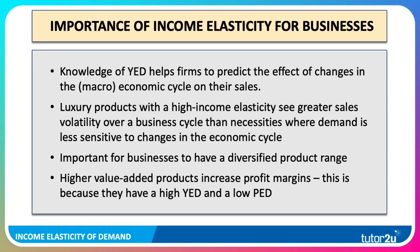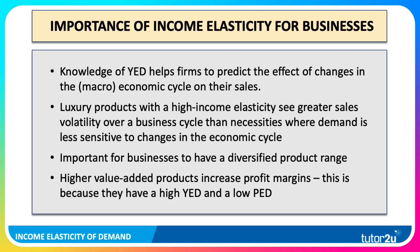Knowledge of this helps firms predict the effect of changes in the macroeconomic cycle on their sales, revenue, and ultimately their profits. Luxury products with a high YED of more than plus one tend to see greater sales volatility over a business cycle than necessities, where demand is more predictable and stable from year to year. It's typically important for businesses to have a diversified product range. Supermarkets have that — from basic economy products to premium higher-value products — and those higher-value products increase profit margins because they have a high income elasticity of demand and typically a low coefficient of price elasticity.